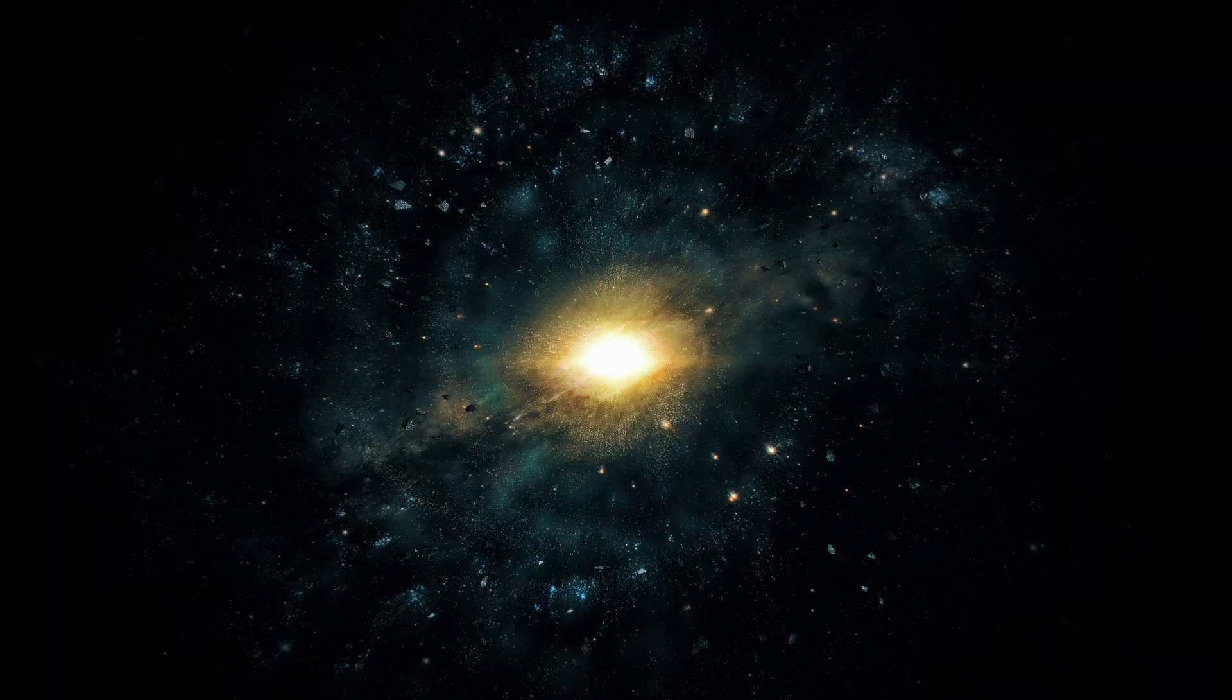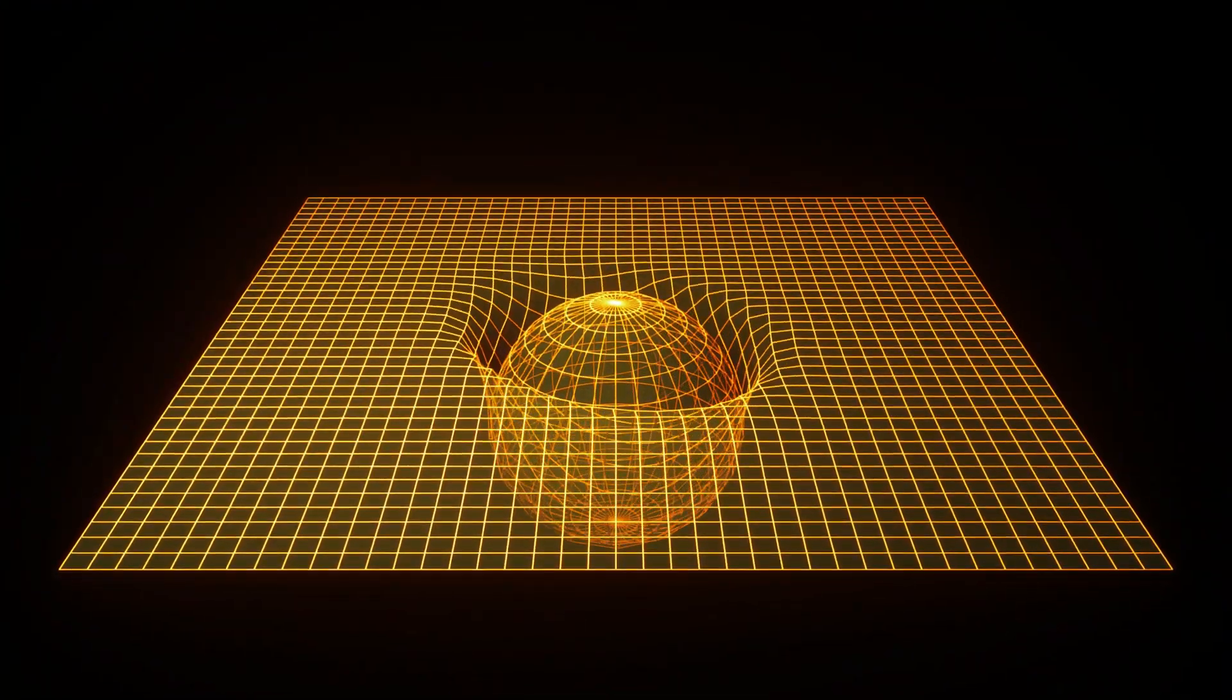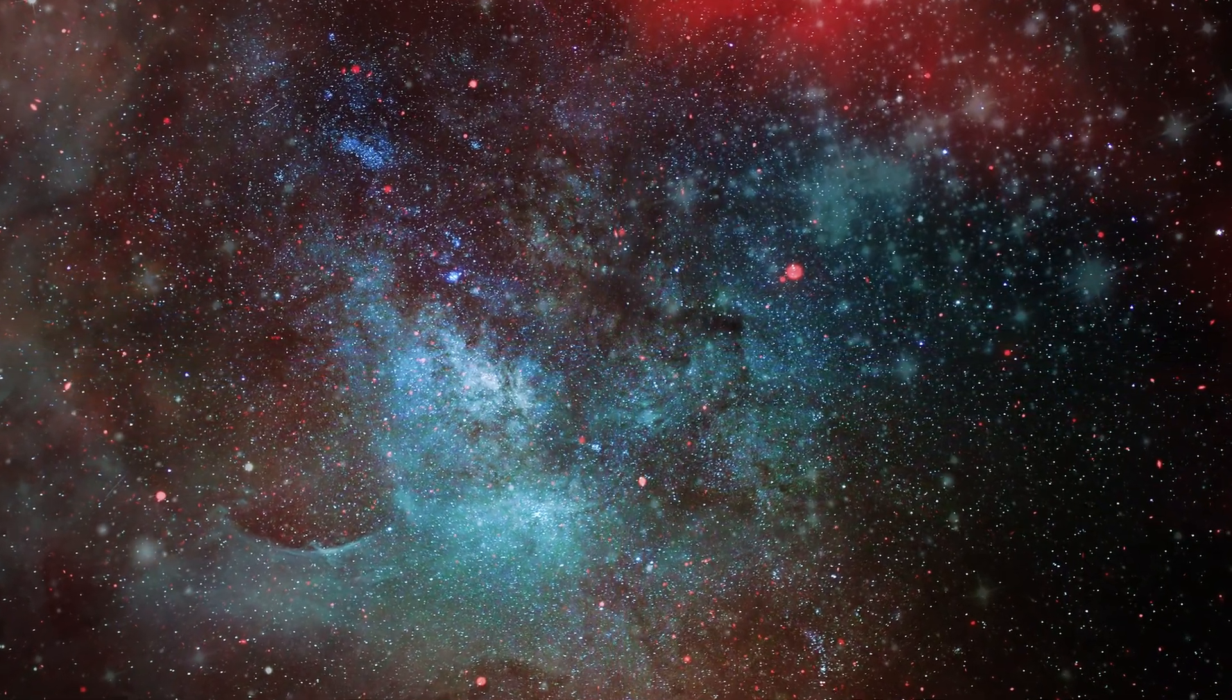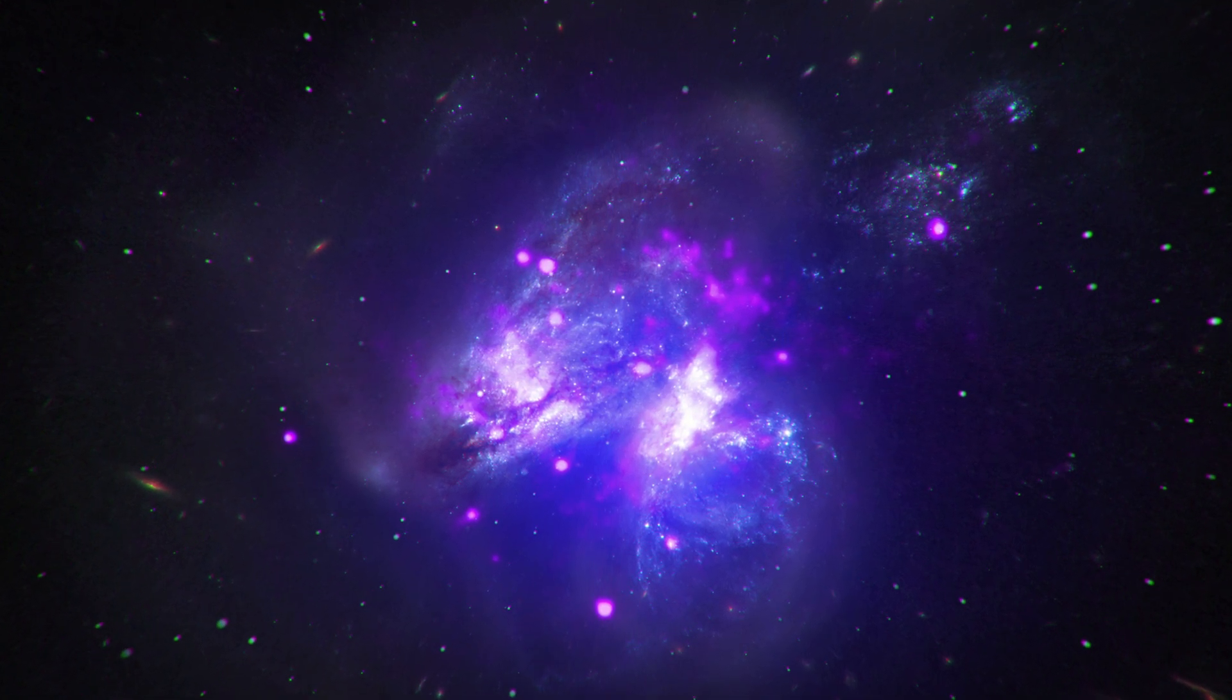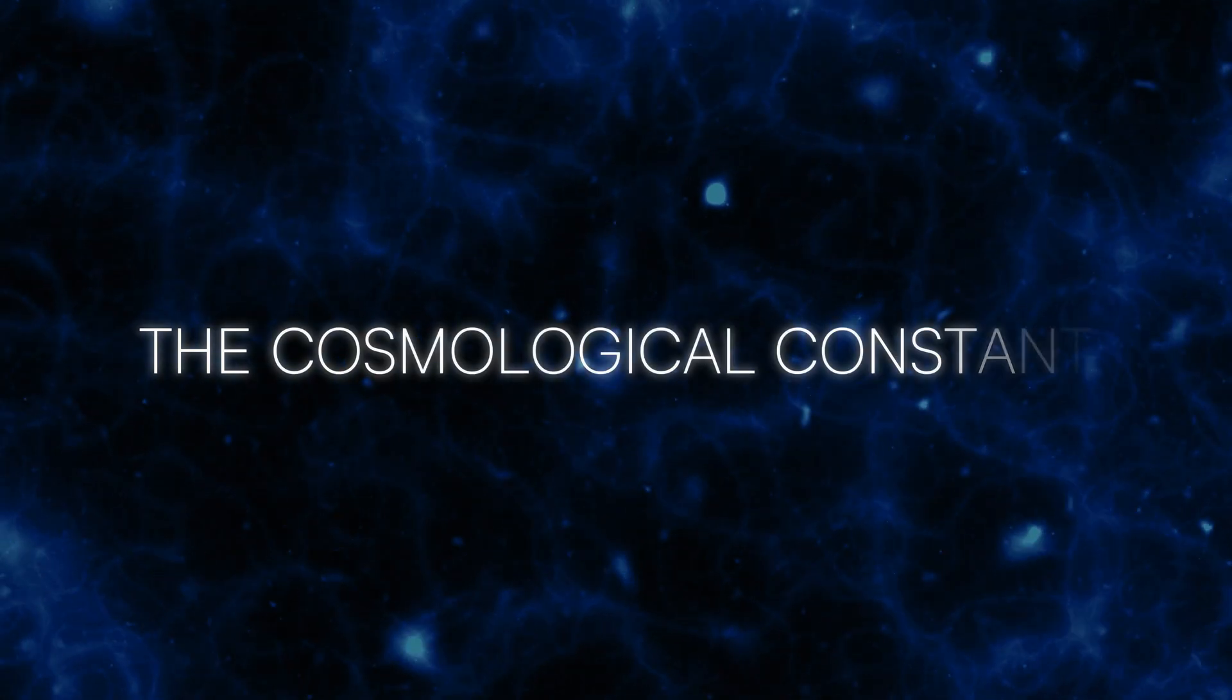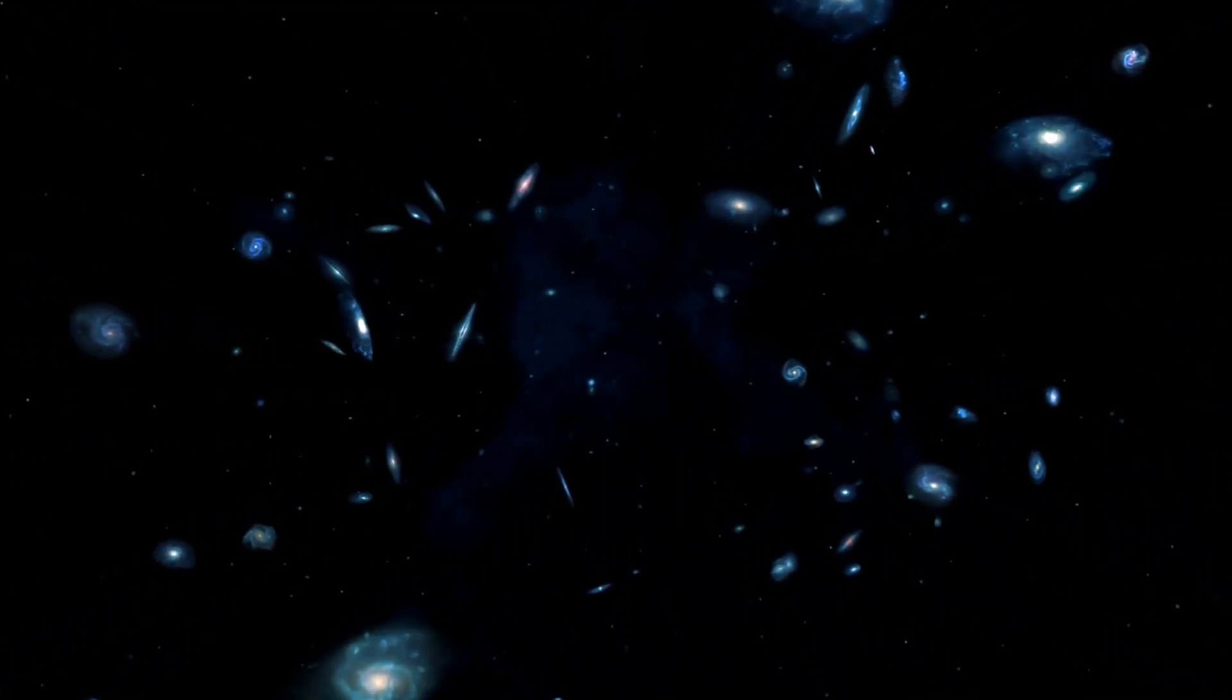There are several theories about what dark energy might be. One theory is that dark energy is a property of space itself. When Einstein formulated his general theory of relativity, it predicted a dynamic universe, either expanding or contracting. At that time, however, the prevailing belief was that the universe was static, meaning it was neither expanding nor contracting. To reconcile his equations with this view, Einstein introduced a term now known as the cosmological constant. This constant acted as a repulsive force, counteracting gravity to achieve a balanced, static universe.